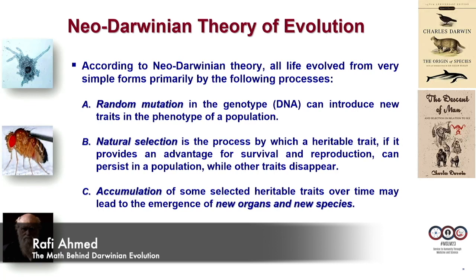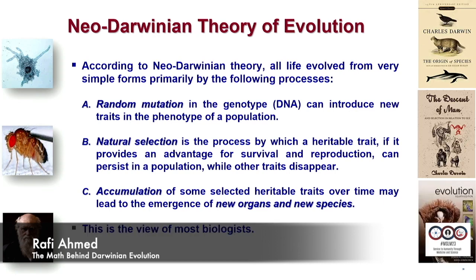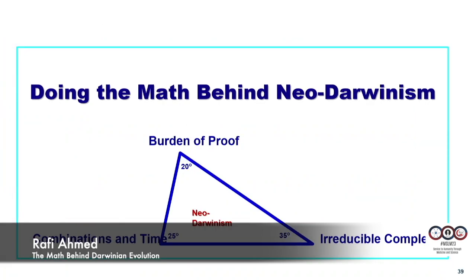If — and there is a big if — it provides an advantage for survival and reproduction. This is the view of most biologists today, most but not all. Now, a little bit about the math behind neo-Darwinism. I will talk about three aspects: burden of proof, combination and time, and irreducible complexity. The angles in the Darwinian triangle do not add up — they do not add up to 180 degrees.